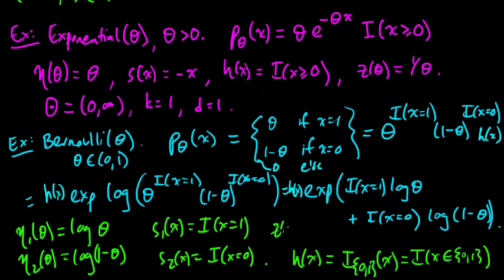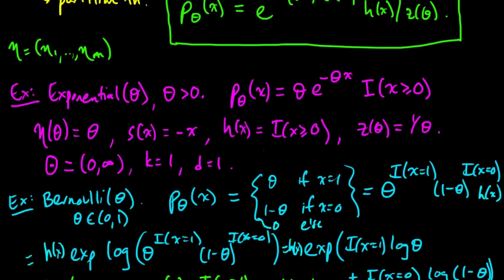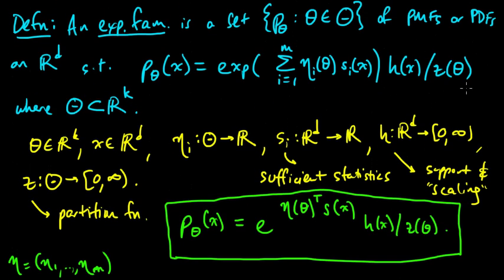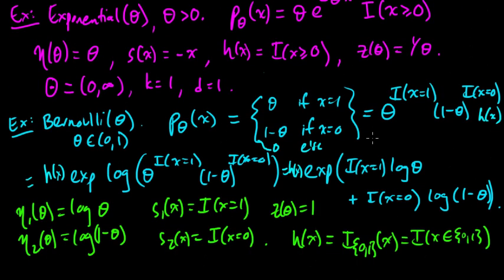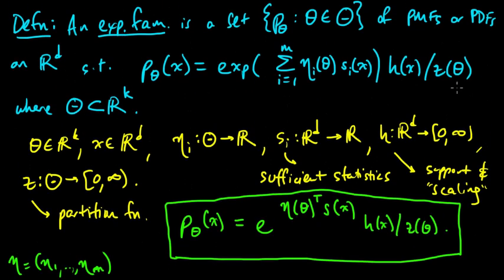And I said z of theta is just 1. And so, now we have our η₁, our η₂, our s₁, and our s₂. They're all in the exponential. We have a z of theta is just 1, and h of x. And so that is precisely in this form. So Bernoulli is also a member of the exponential family. And remember, in this case, it's a PMF rather than a PDF. Or rather, it's a family of PMFs rather than a family of PDFs.